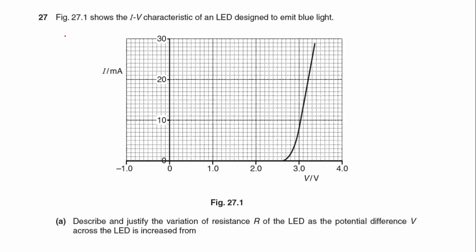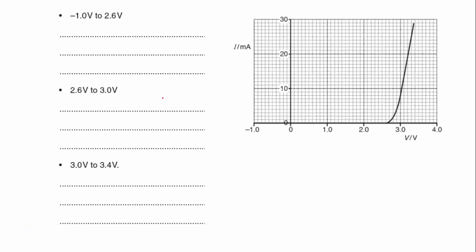It's question 27. We've got figure 27.1, which shows the IV characteristics of an LED designed to emit blue light. The first part A is we've got to describe and justify the variation of resistance R of the LED as the potential difference V across the LED increases from, and we've got three different sections to go.